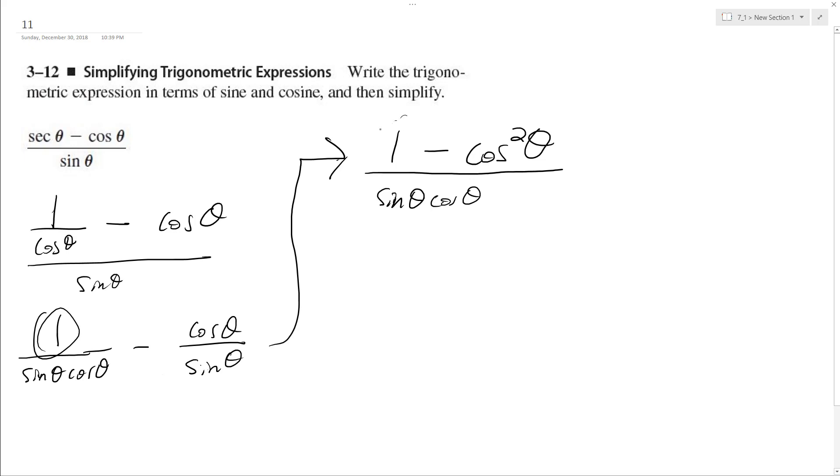So 1 minus cosine squared theta, this is from the trig identity, sine squared plus cosine squared equals 1. So I can rewrite this as sine squared theta over sine theta, cosine theta.